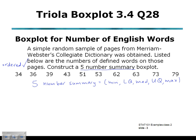We'll calculate the median first. The median is our middle value when the data are in order. Our median value here is going to be our halfway position between the 5th and the 6th. We've got 10 values in our data set. N is 10, so our positioning point will be 10 plus 1 divided by 2, or our 5.5 position. So halfway between 51 and 53, giving a median of 52.